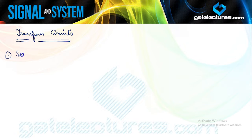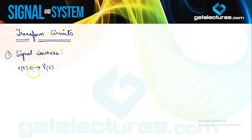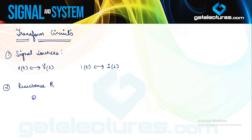We start with signal sources — voltage sources or current sources. The transformation of voltage sources from the time domain to the S domain is going to be simple. Similarly for the current source. If you look at the transformation of resistance, since resistance is a linear element following a simple linear equation, in the S domain this is going to be V(s) = R·I(s).